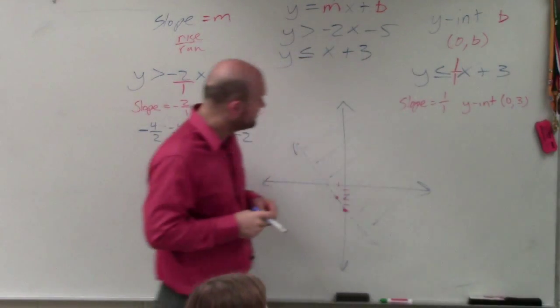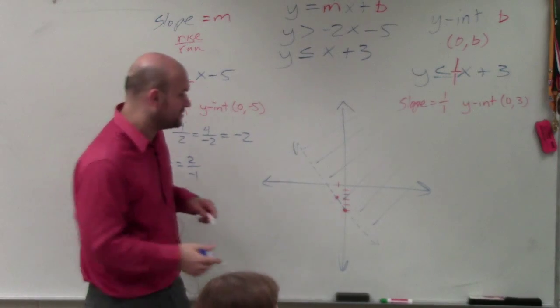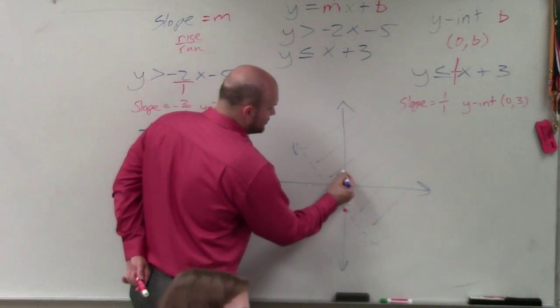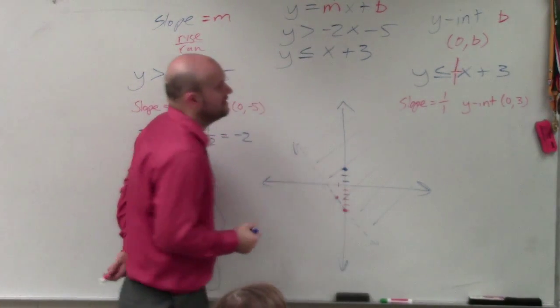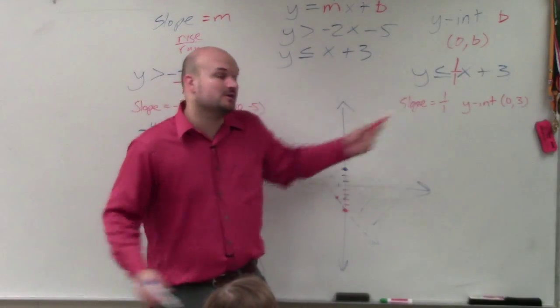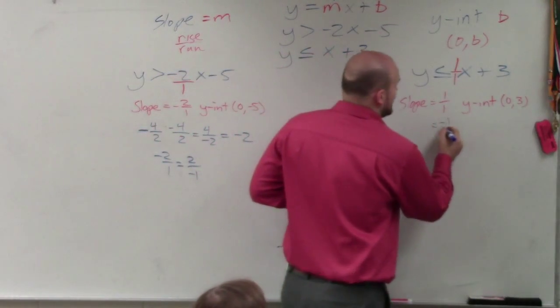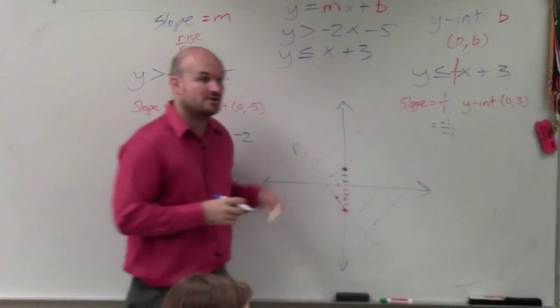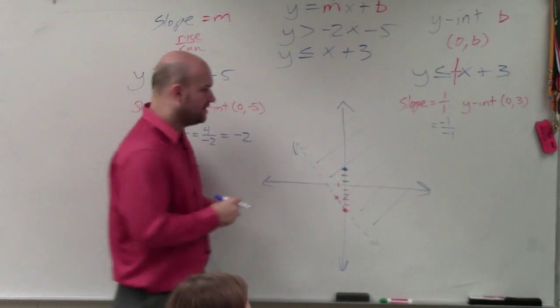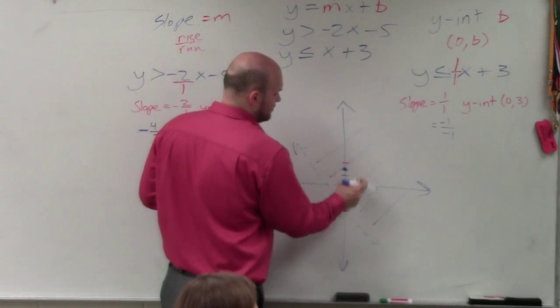Then we go over here. First thing we do is we find the y-intercept, which is 0, 3. Then I use the slope 1 over 1, which you could also do as negative 1 over negative 1. So I'd be down 1 to the left 1. But I'll just go up 1 over 1.